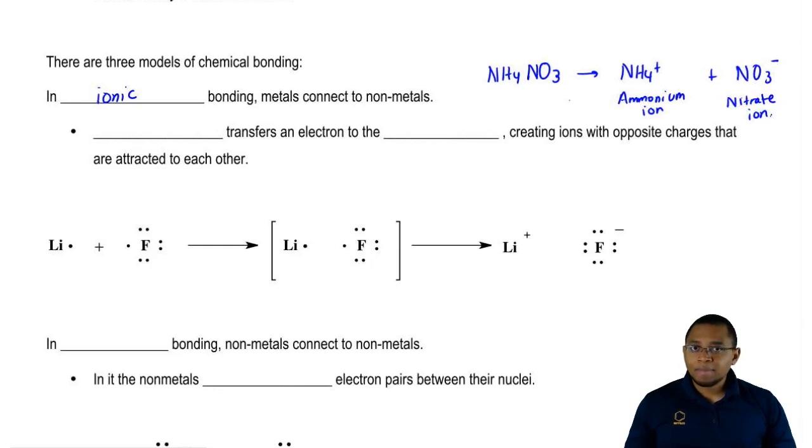Usually ionic compounds are between metals because they're usually positive. They're positively charged ions and nonmetals which are negative ions. But that's not always the case for ionic bonding. Ionic bonding fundamentally is just the bonding between a positive ion and a negative ion.